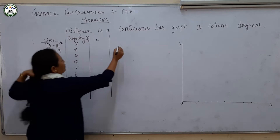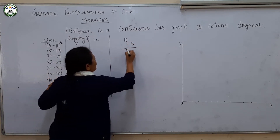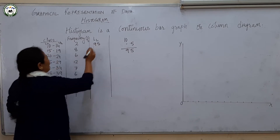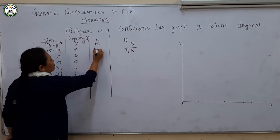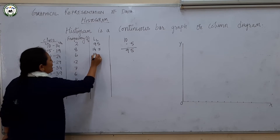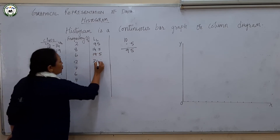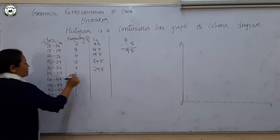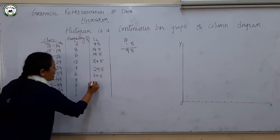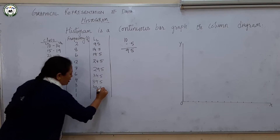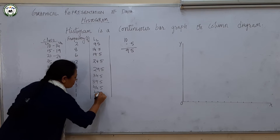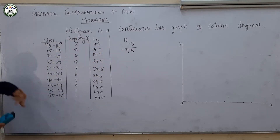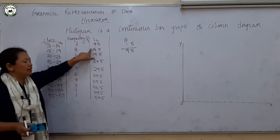If you subtract from 10 minus 0.5 you will get 9.5 — this is the actual lower limit of the first class. Similarly, from 15 you get 14.5, then 19.5, 24.5, 29.5, 34.5, 39.5, 44.5, 49.5, and 54.5. If you subtract 0.5 from all the lower limits, you will get these actual lower limits.